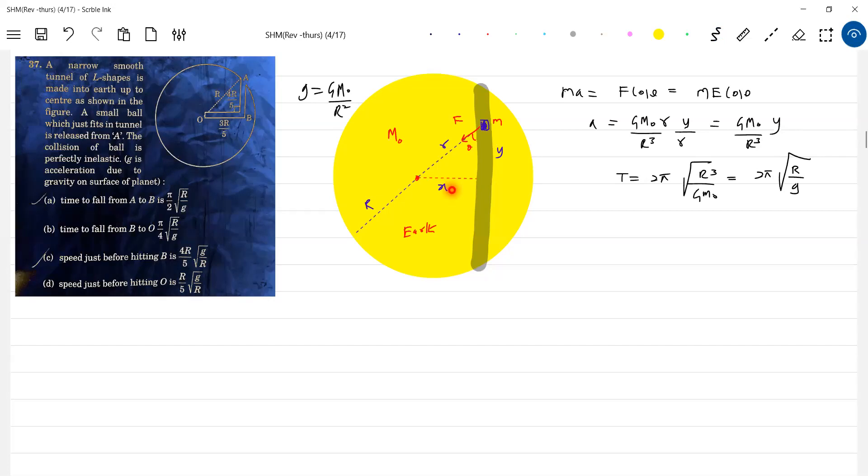So is it independent of x? Yes it is. Either the chord is like this or like this or like this or even x equal to zero. If the tunnel is along the diameter, the time period of oscillation is given by this particular formula. I think it will come 84.6 minutes, am I right?